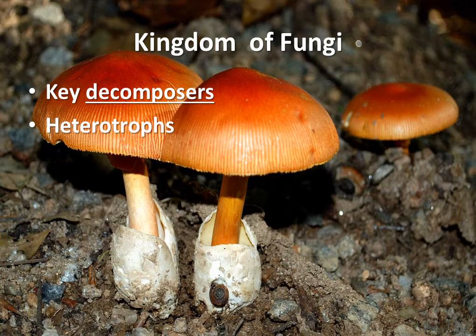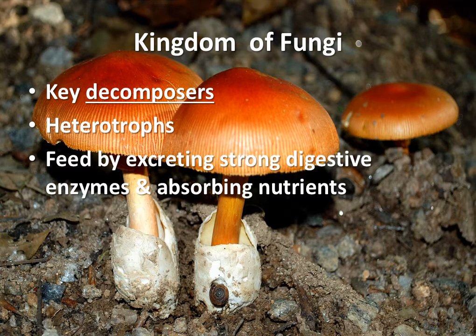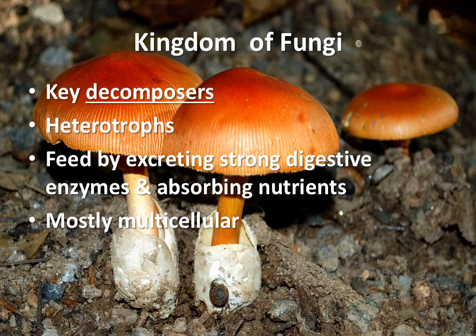Fungi eat other living things — they're heterotrophs, not autotrophs like algae or most plants. Specifically, they eat things that are already dead. The way they do that is by excreting digestive enzymes outside of the actual fungi, which break down the organic matter of whatever was once living. They then reabsorb those nutrients that are now more readily available. They are important because they help break down dead things so those nutrients can be reused by fungi and other living things. The vast majority of fungi are multicellular — larger, more complex organisms.